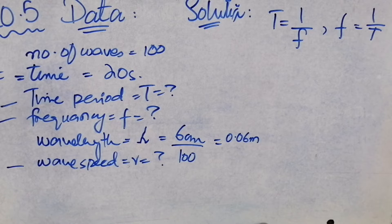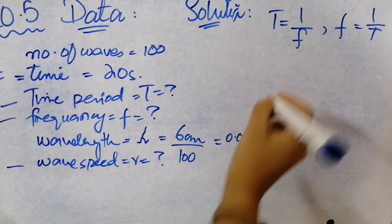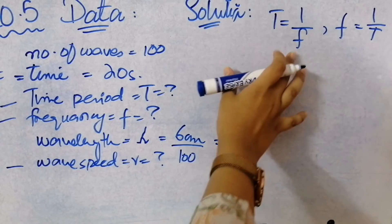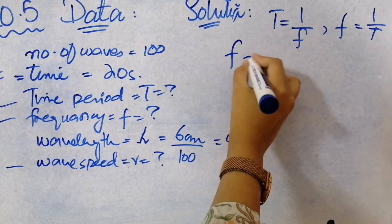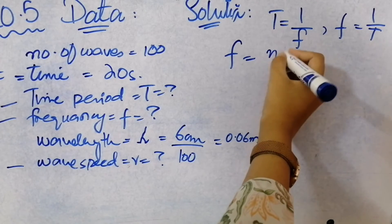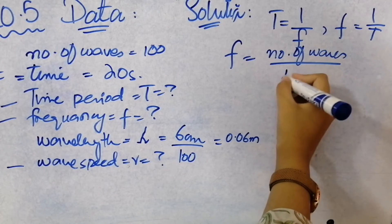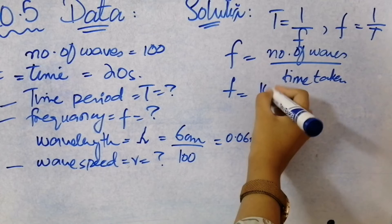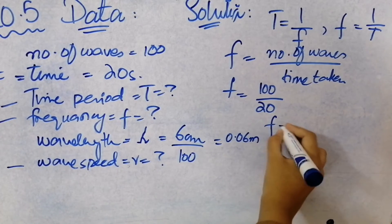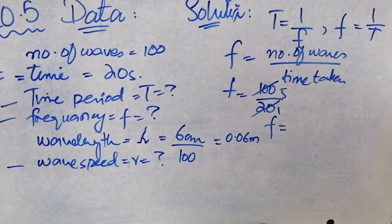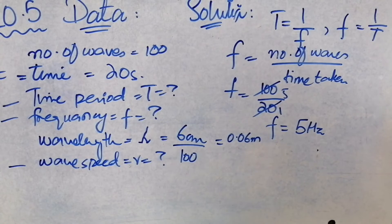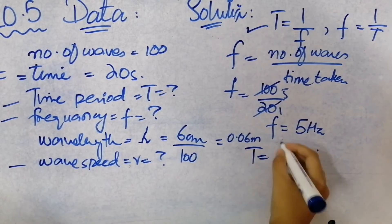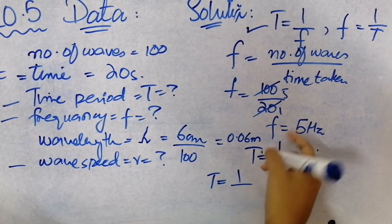So you have number of waves given and time given. Frequency equals number of waves divided by time, which gives 5 Hertz. Then we apply the formula T is equal to 1 upon F, which is 1 upon 5, giving you 0.2 seconds.